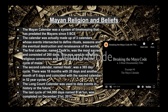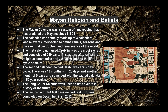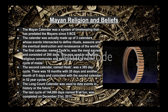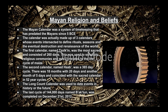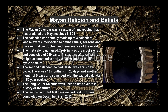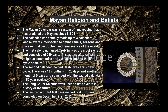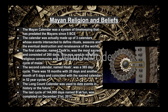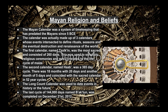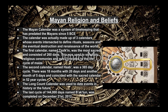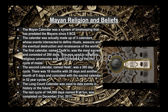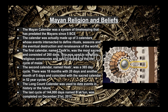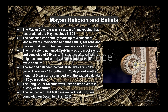The Mayan calendar was a system of timekeeping that predated the Mayans since 5 BCE. It was made up of three calendars whose events intersected to define rituals, seasons, and eventual cycles. The first calendar, named Tzolk'in, was the most sacred, consisting of 260 days used to schedule religious ceremonies correlated to the life cycle of maize. The second calendar, named Haab, was the 365-day cycle with 18 months of 20 days and one month of 5 days. The long-term calendar dated historical and future events. The last cycle of 144,000 days, named Bak'tun, was completed on December 21, 2012 — which is why everybody thought the world was going to end.